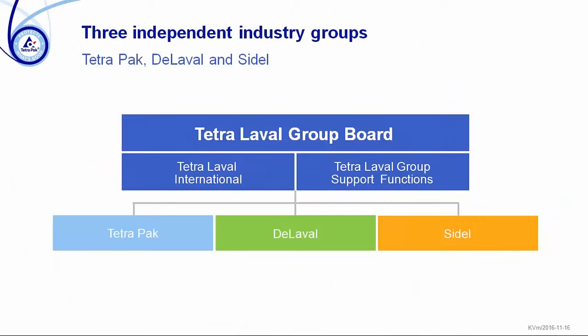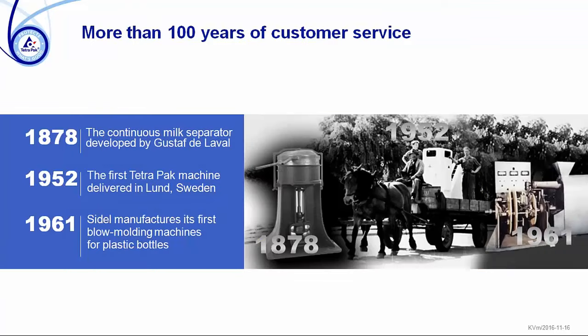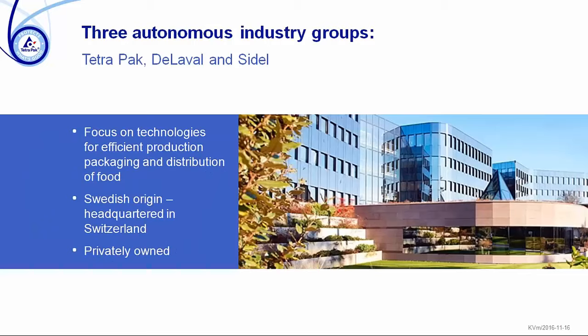We are working with food and food safety. The Tetra Pak Group consists of three companies: Tetra Pak, Delaval, and Cidel. Those companies together have a very long history — we started already in 1878, so really a long history, with the first milk separator developed by Mr. Delaval. Then in 1952, the first packaging machine for milk was delivered in Lund, Sweden, and in 1961 the first blow molding machine for plastic bottles was delivered.